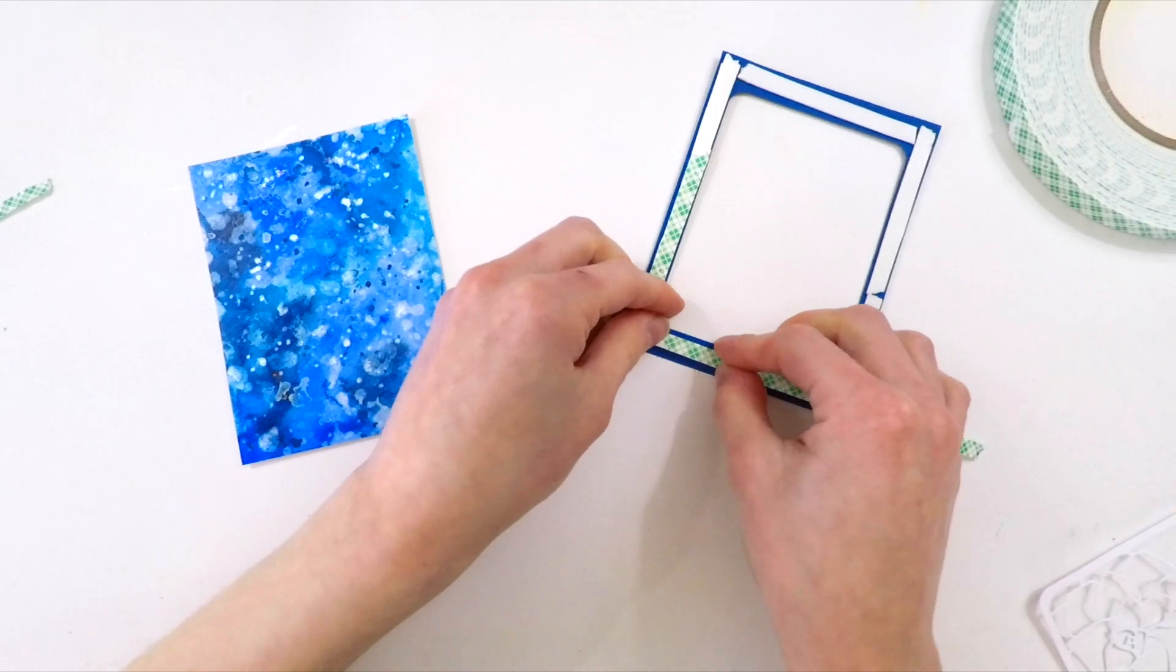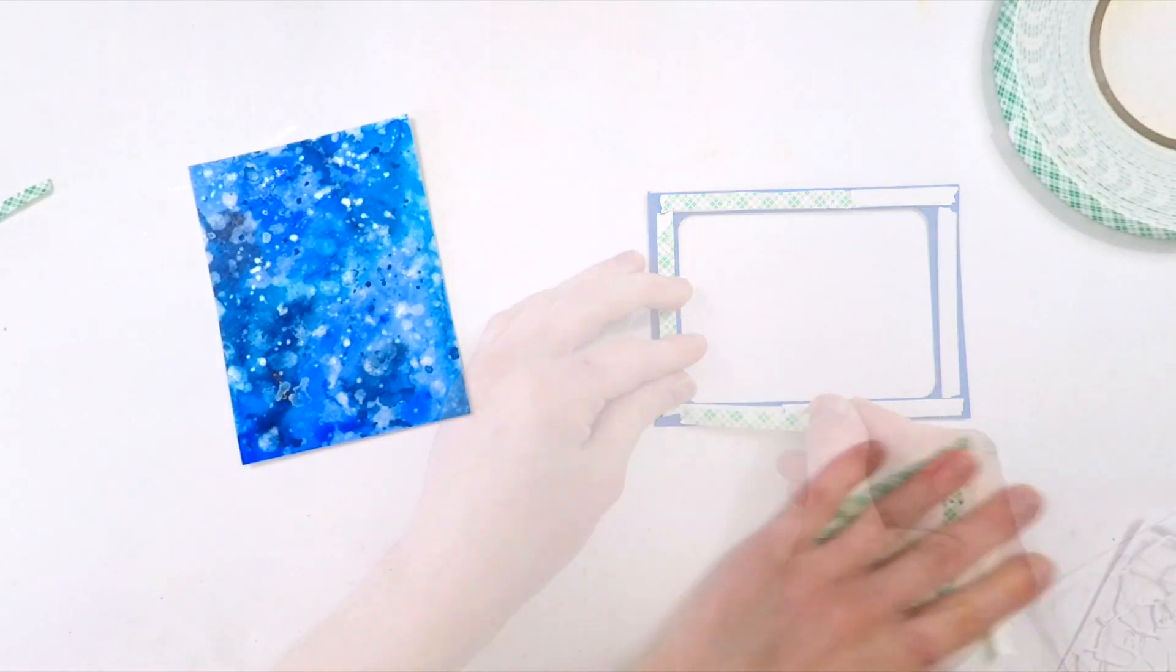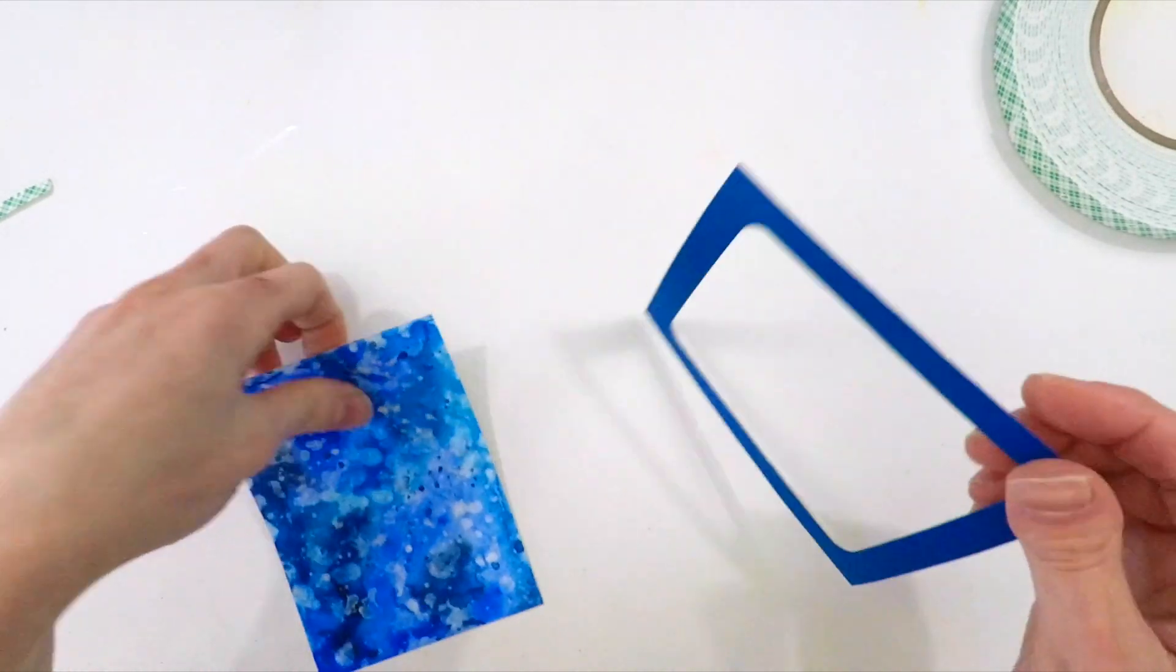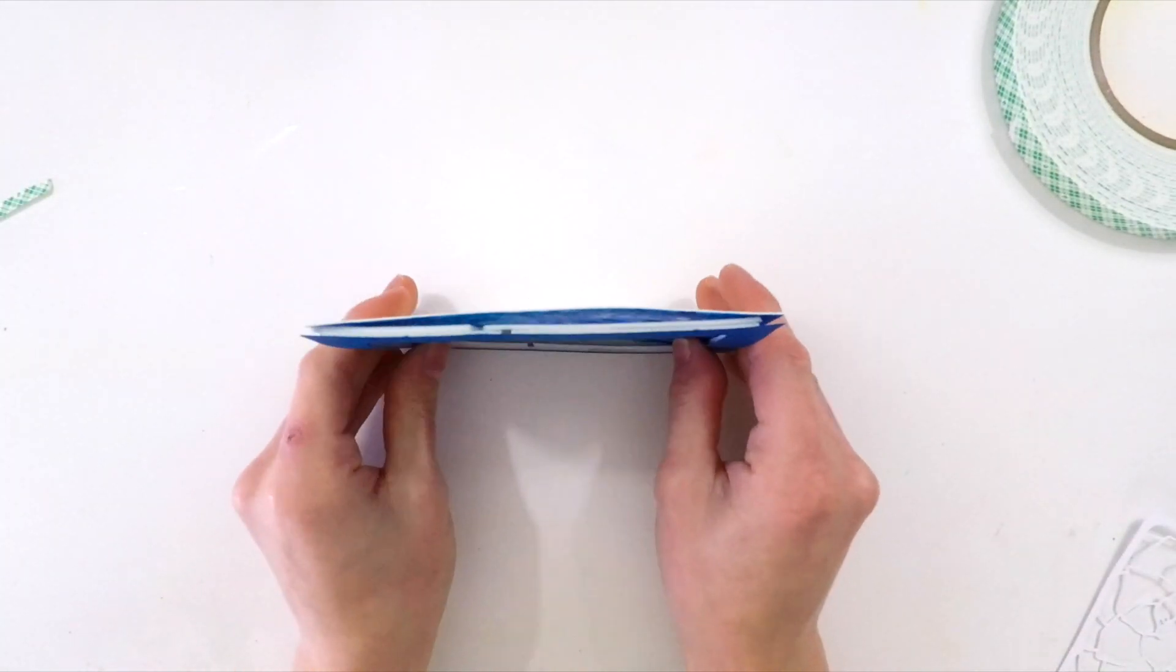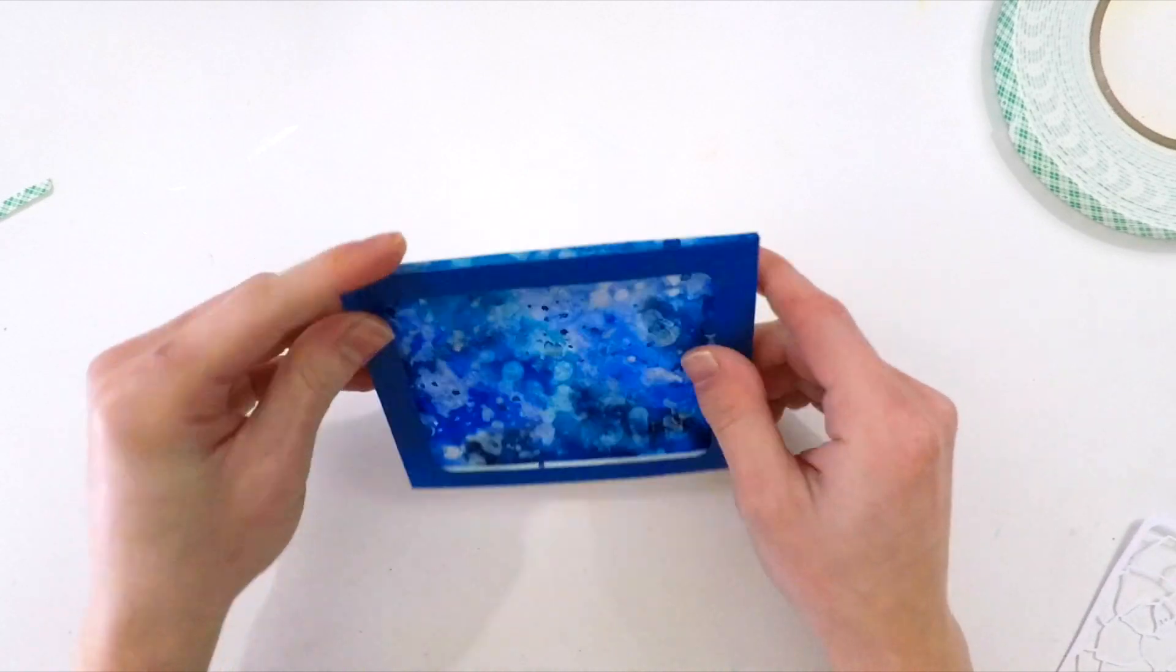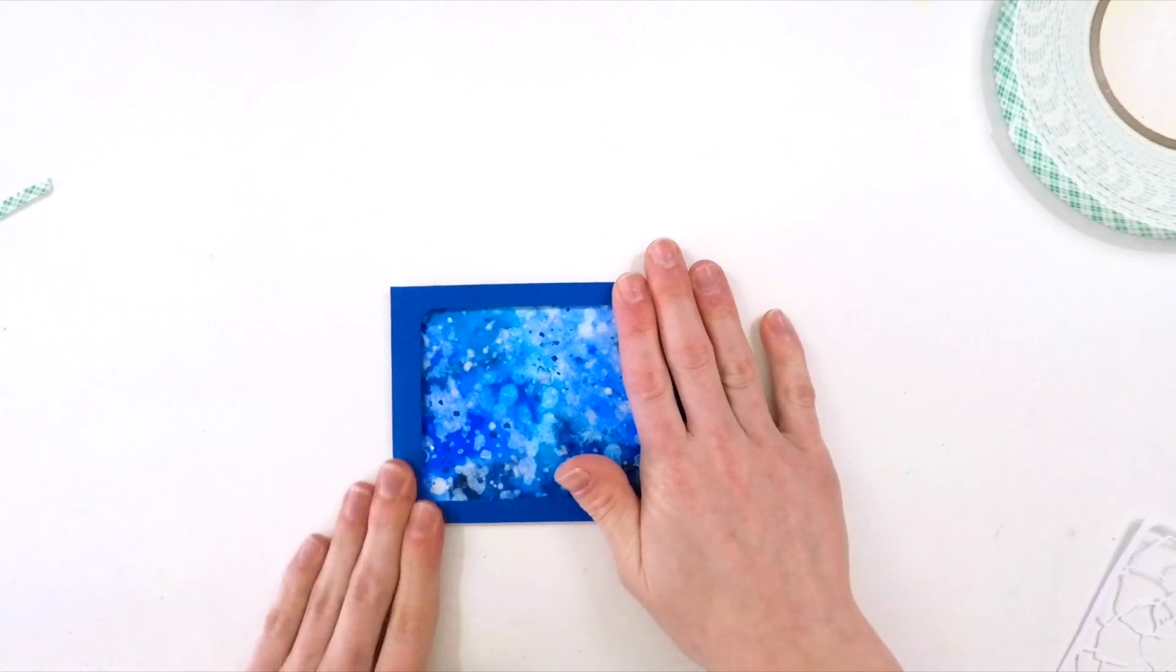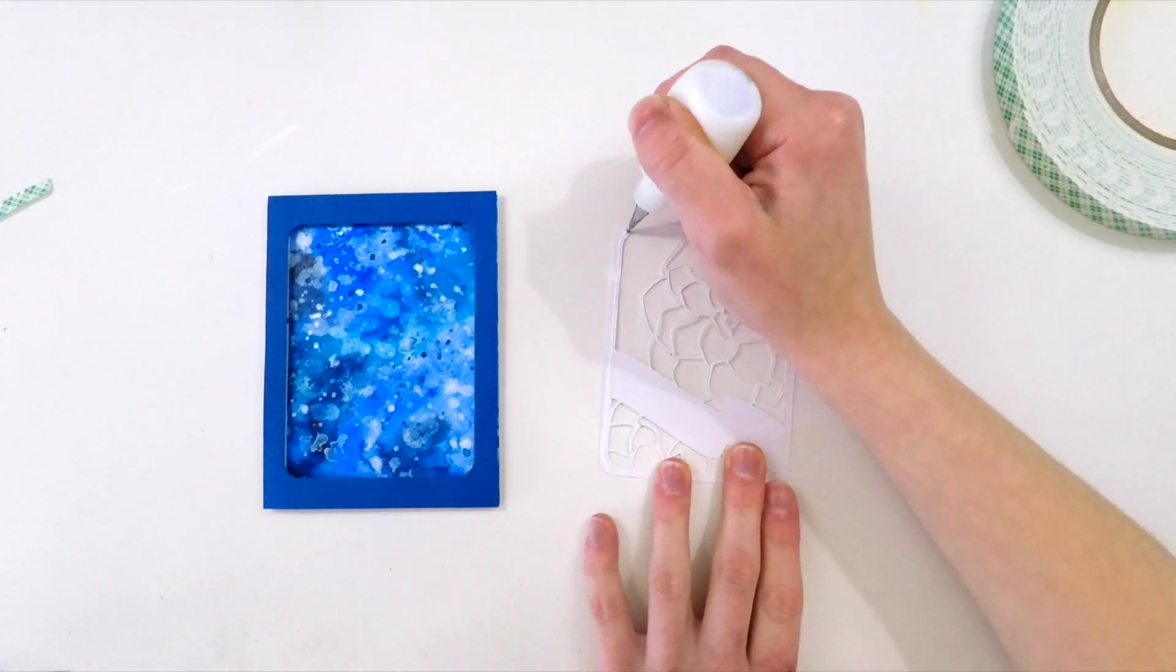I'm going to have two layers of foam tape, and that'll give this some nice dimension off of that watercolor panel, creating a recessed look. The best way to line up these panels is to turn it on its side. Because they're the exact same size, I don't have to worry about one being bigger than the other. I can just turn that on its side and press it down, and it's lined up perfectly.